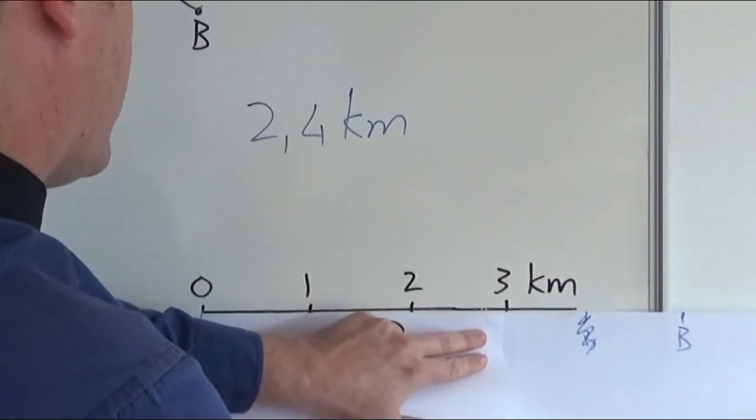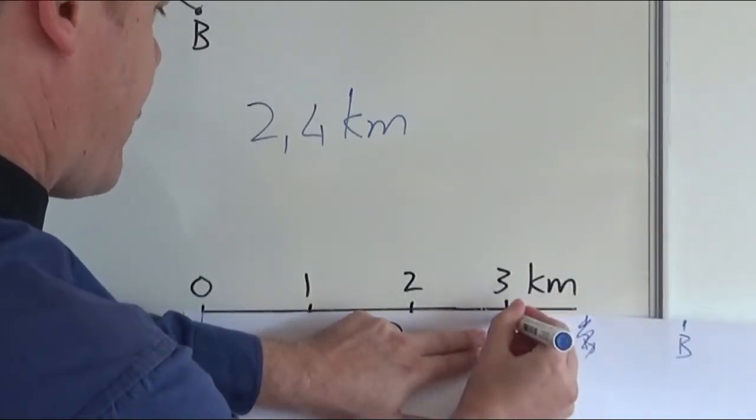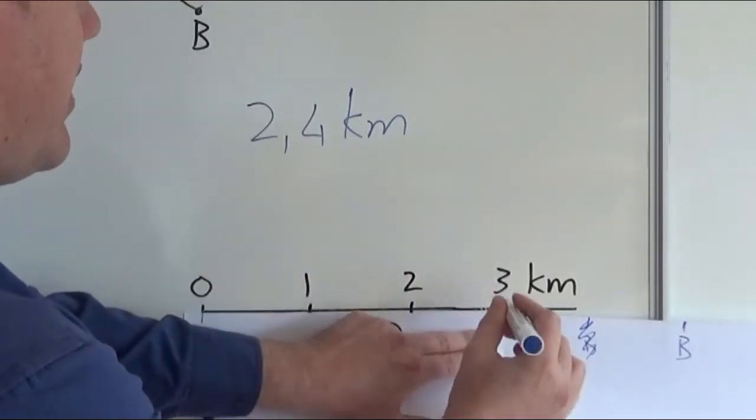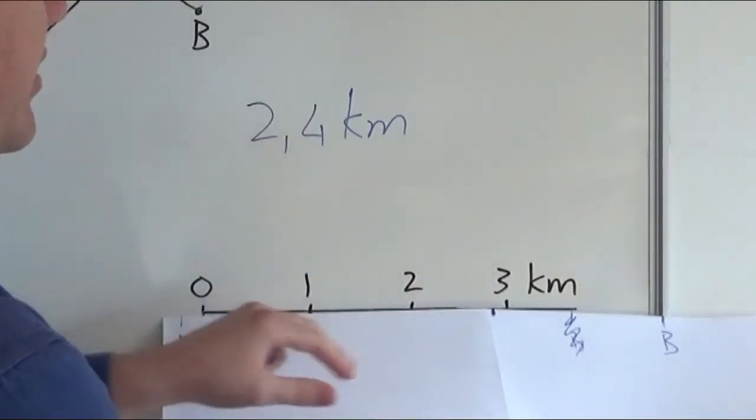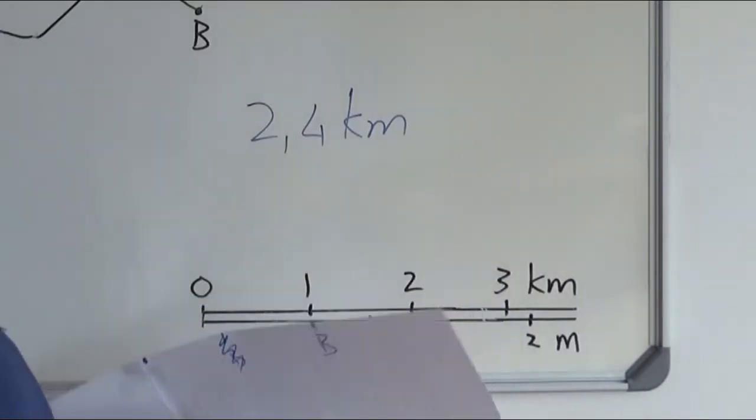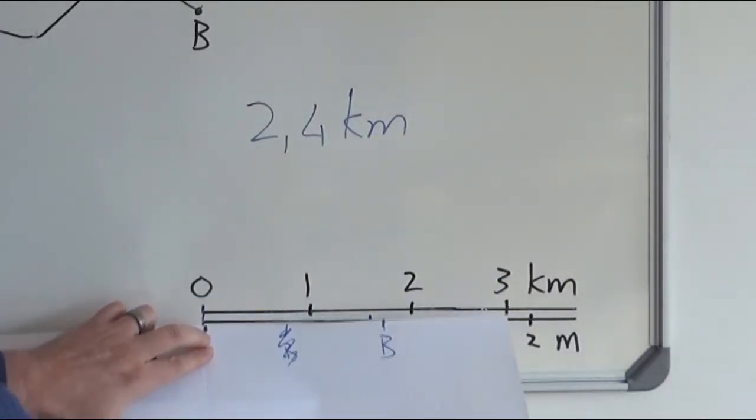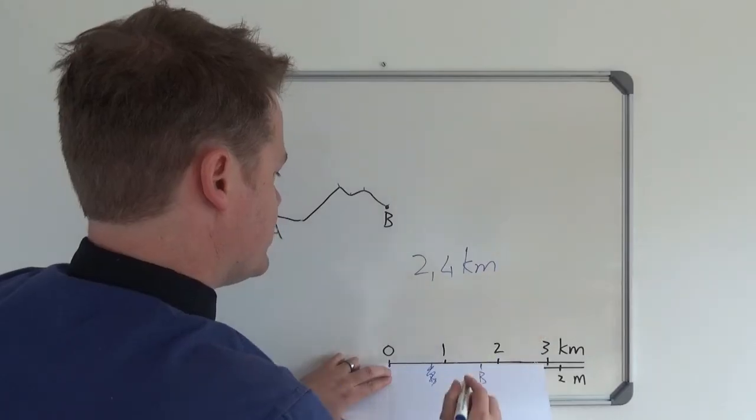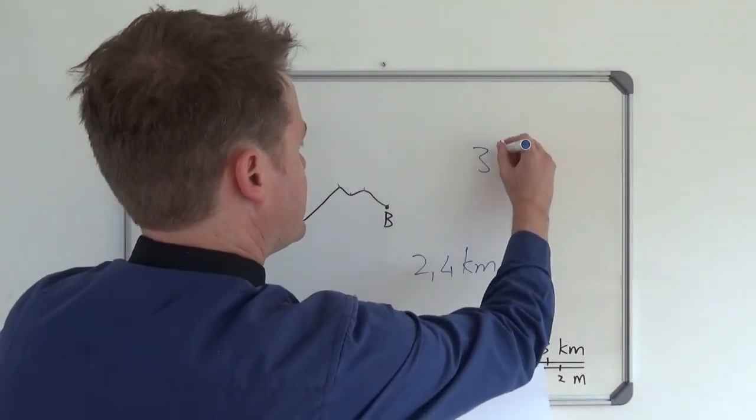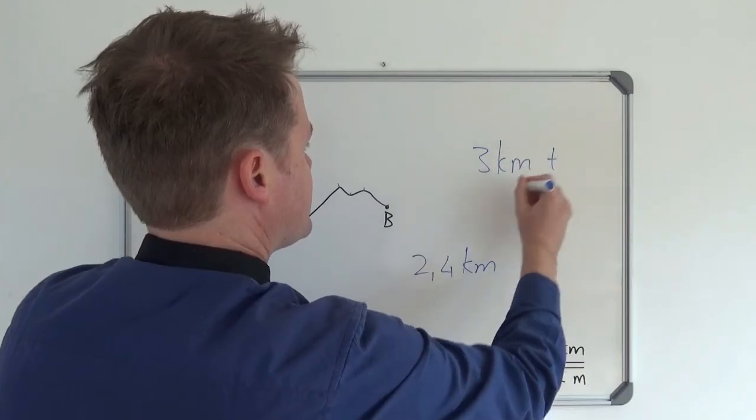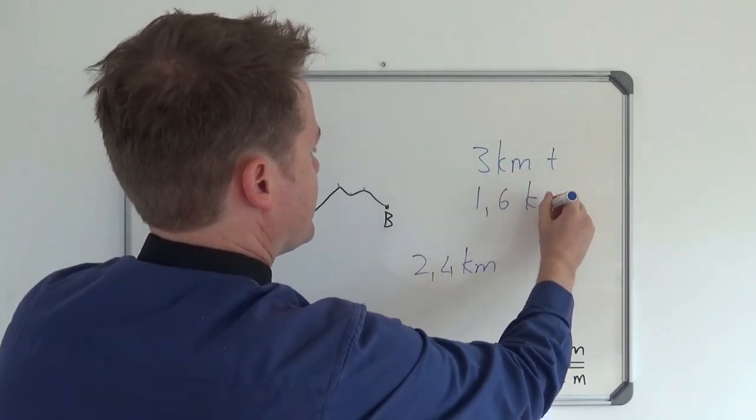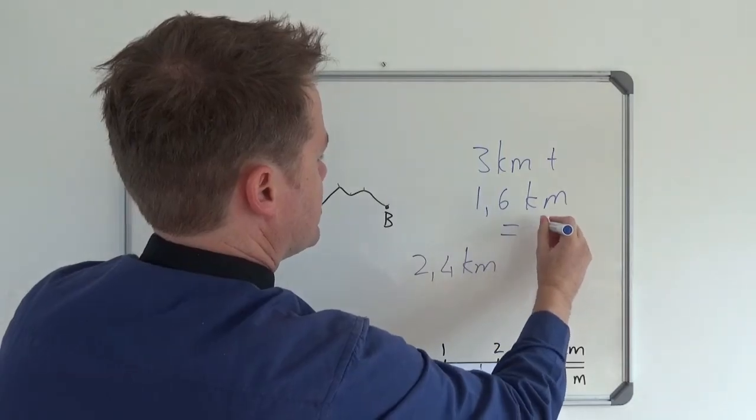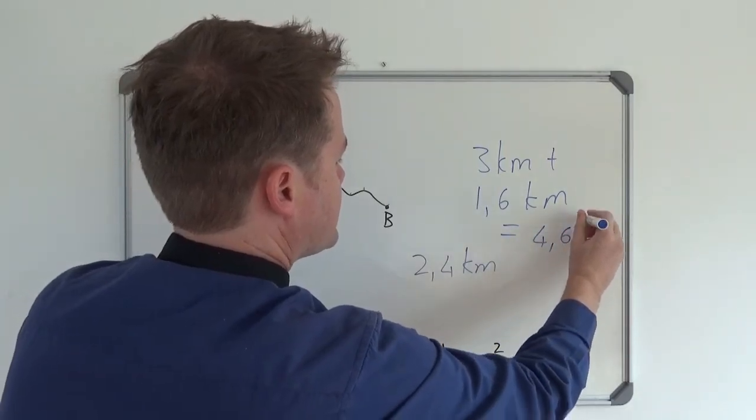We will make another mark and then we know the distance from there to there is 3 kilometers. Then we can go right from the start and now we can start from zero. As you can see this is about one point, let's say it's 1.6. So what you will do is you'll say 3 kilometers plus 1.6 kilometers and it will give you a total of 4.6 kilometers.